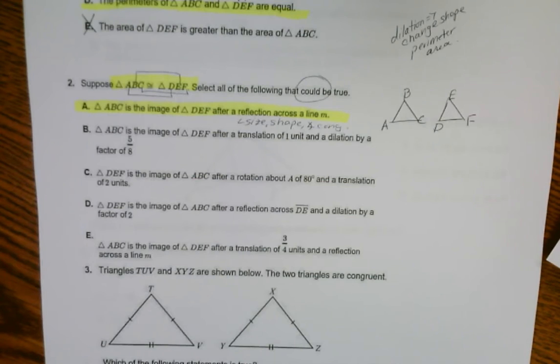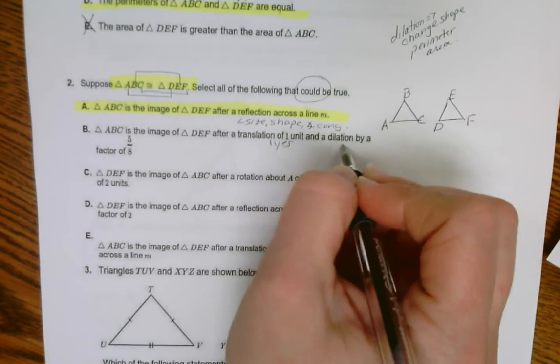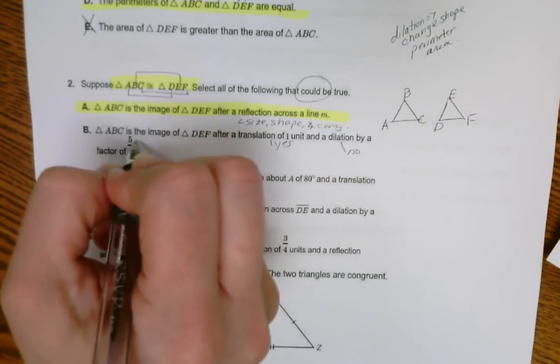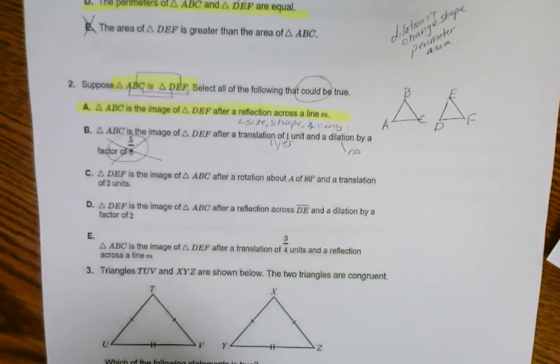ABC is the image after translation of one unit, so that's true, but then a dilation of five-eighths. That's not true simply because dilation changes the size.